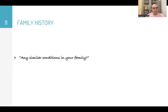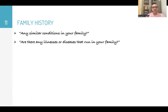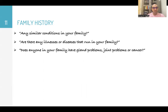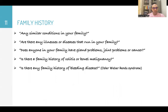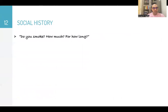Then family history: 'Are there any similar conditions in your family? Are there any illnesses or diseases that run in your family? Does anyone in your family have gland problems, joint problems, or cancer? Is there a family history of colitis or bowel malignancies? Is there any family history of bleeding disease, like Osler-Weber-Rendu syndrome?'